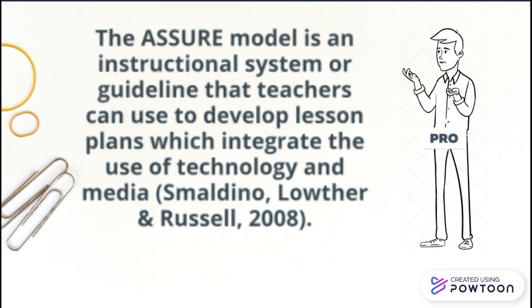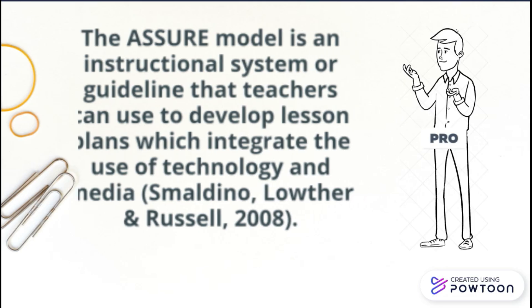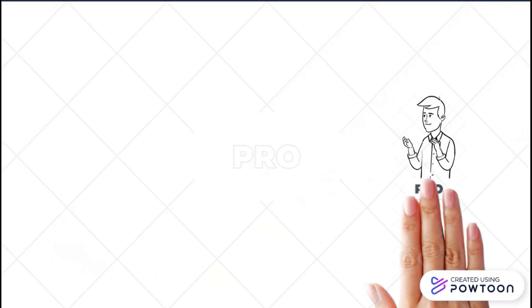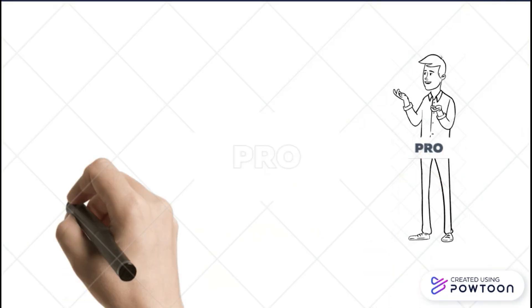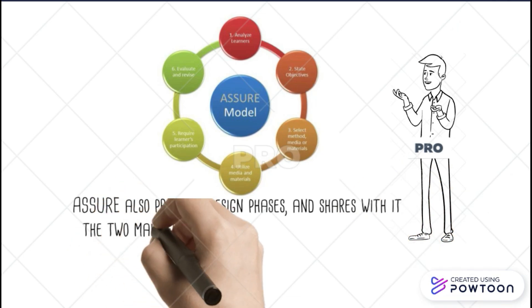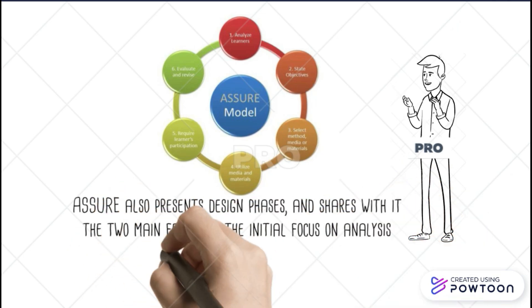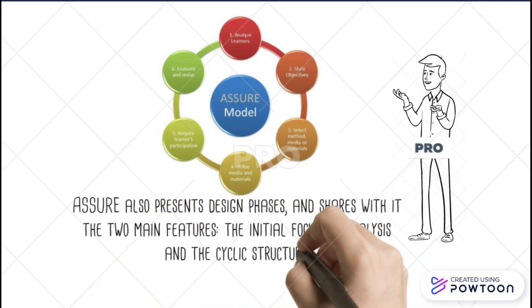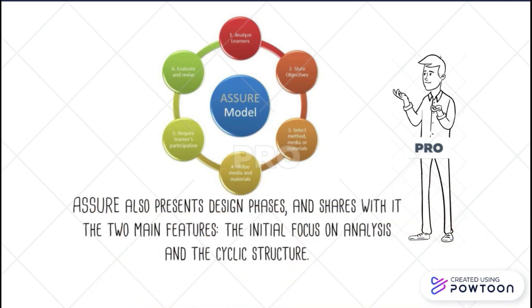The ASSURE Model is an enriched evolution of the ADDIE General Model. Although the ASSURE Model has six steps, which do not exactly correspond to ADDIE's steps, ASSURE also presents design phases and shares with it two main features: the initial focus on analysis and the cyclic structure.